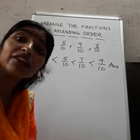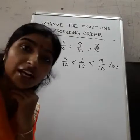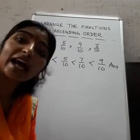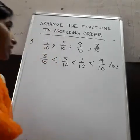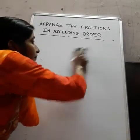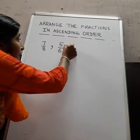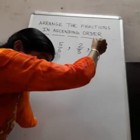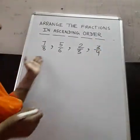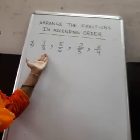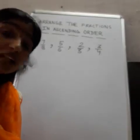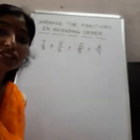Now, if the given fractions are unlike, then what we have to do? The first step is we have to make them like fractions. Let's take an example: 7/8, 5/6, 2/3, and 3/4. These are the given fractions and we have to arrange them in ascending order. Their denominators are not the same — they are unlike. So we have to make them like fractions first.